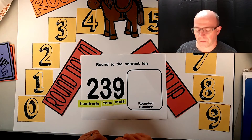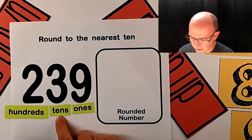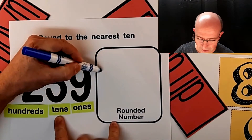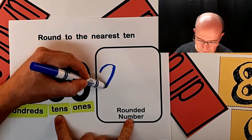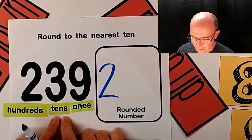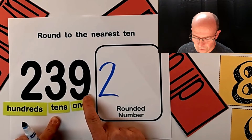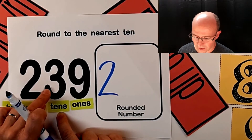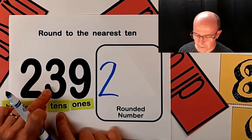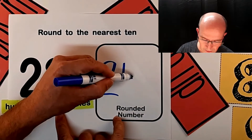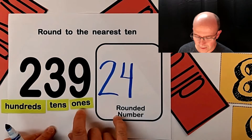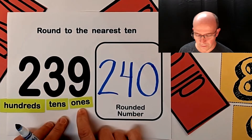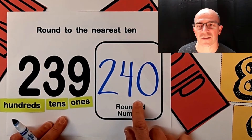So here comes the next part. I'm rounding to the nearest 10. That means that this hundreds digit stays the same in my new number, so I'm going to keep the two. We've already decided that we're rounding up, which means I add one to the tens place — three plus one is four. And this becomes a zero. So my new number, my rounded number, is 240.